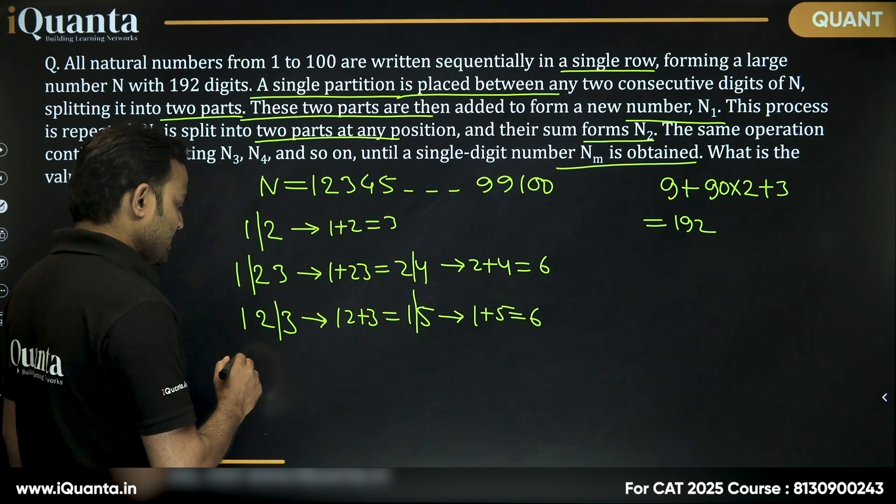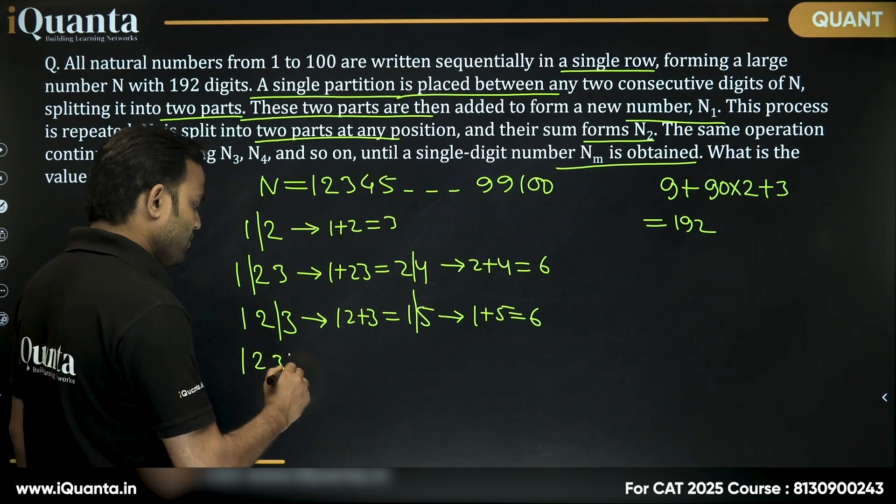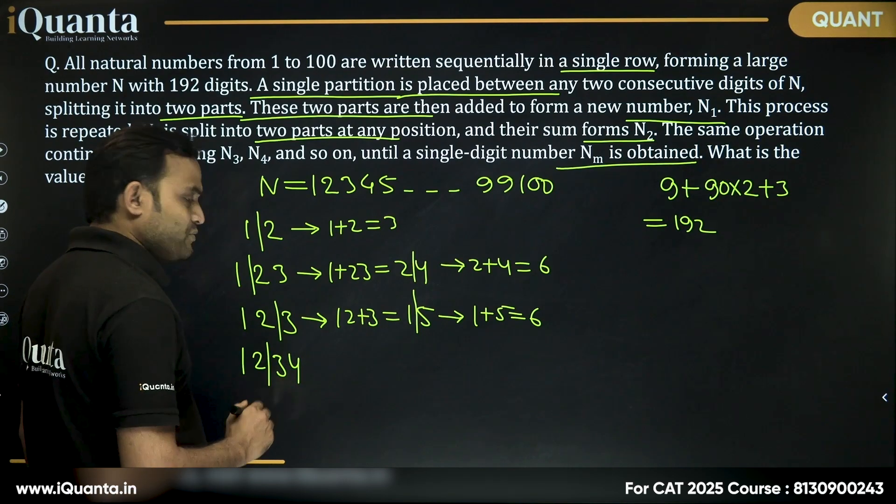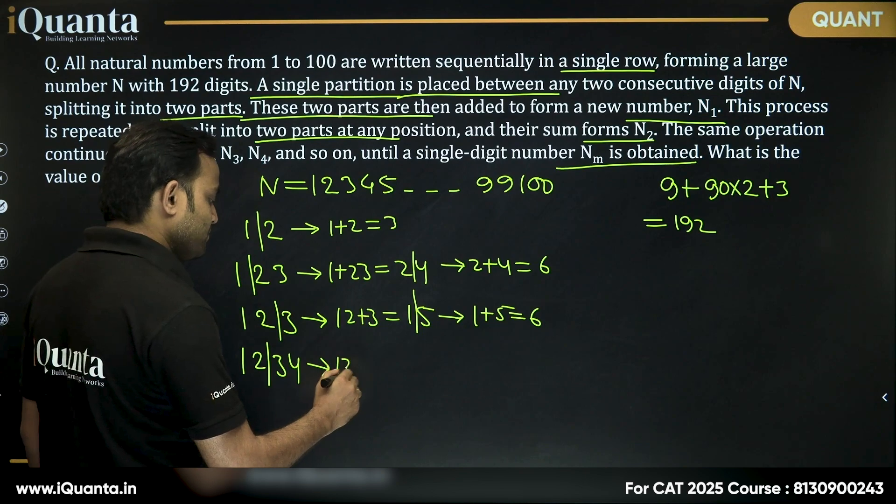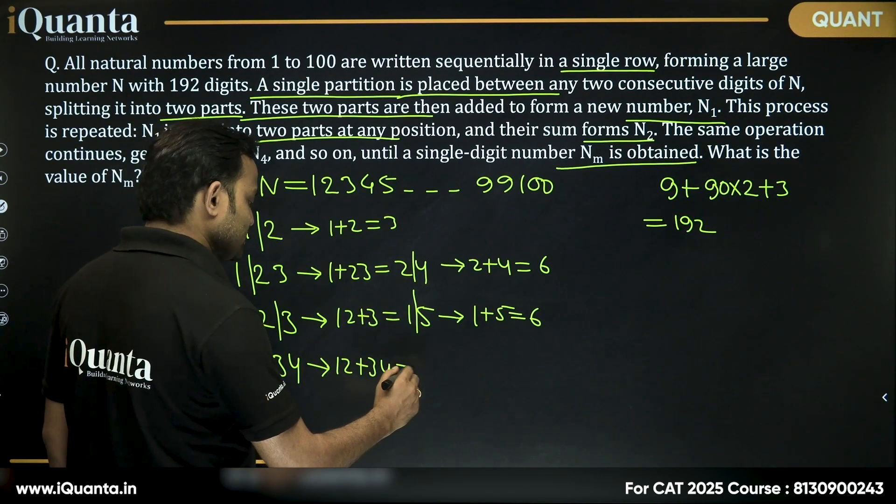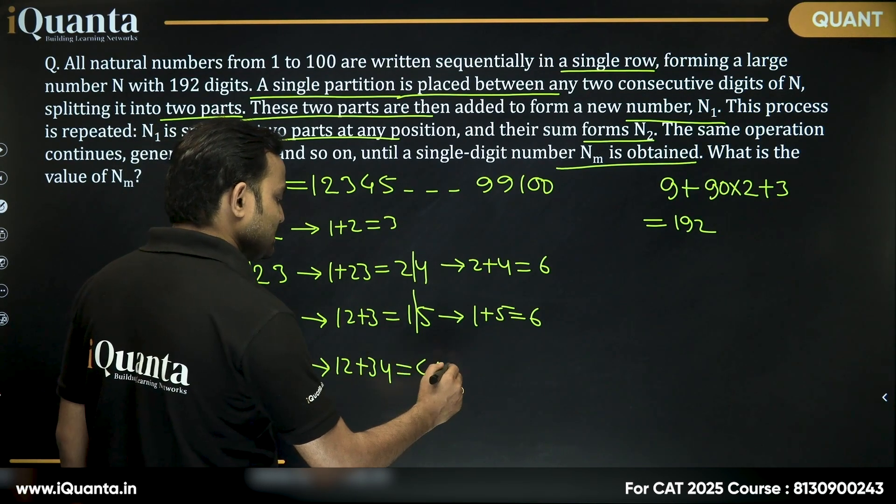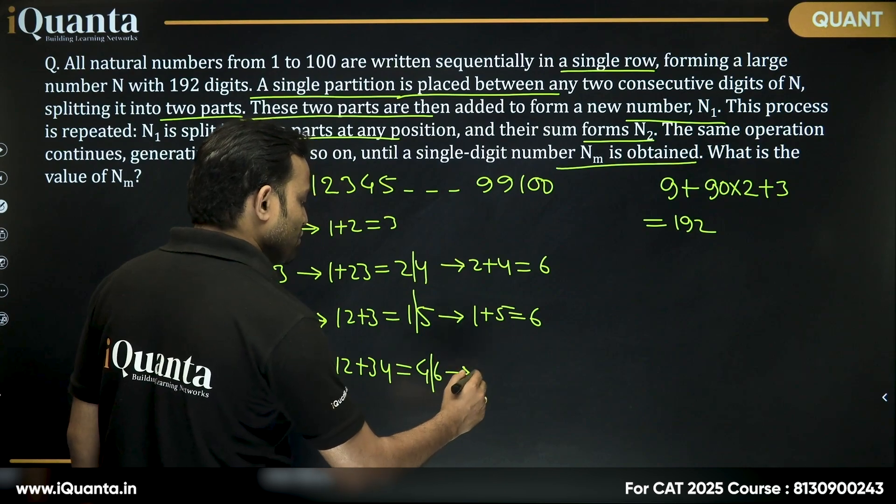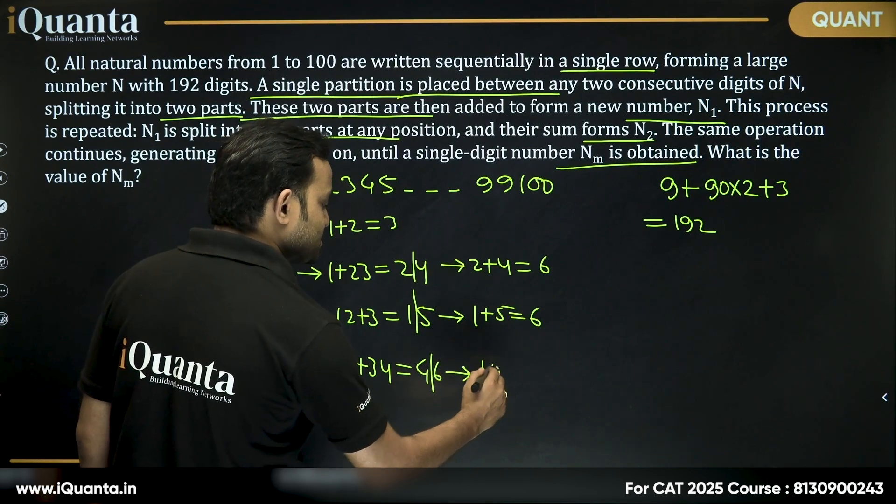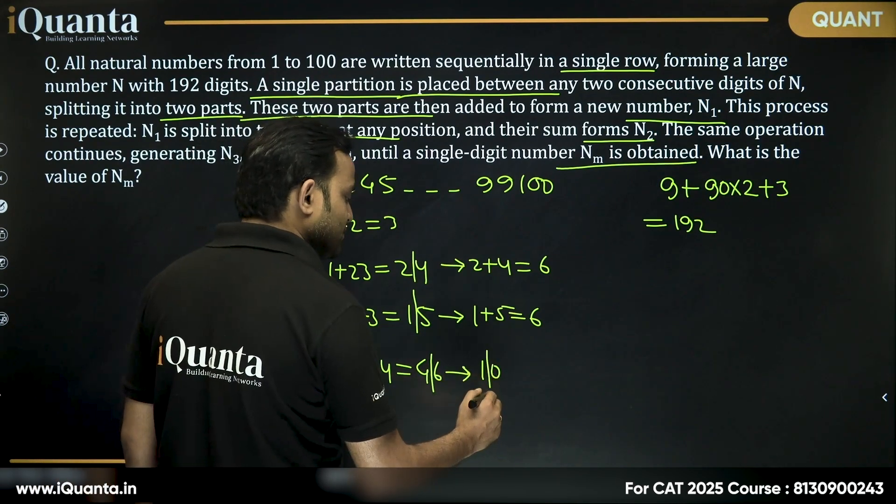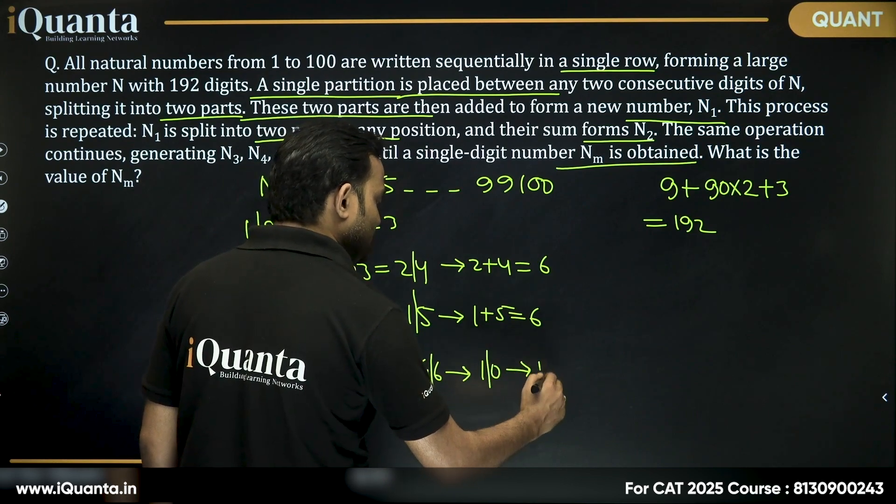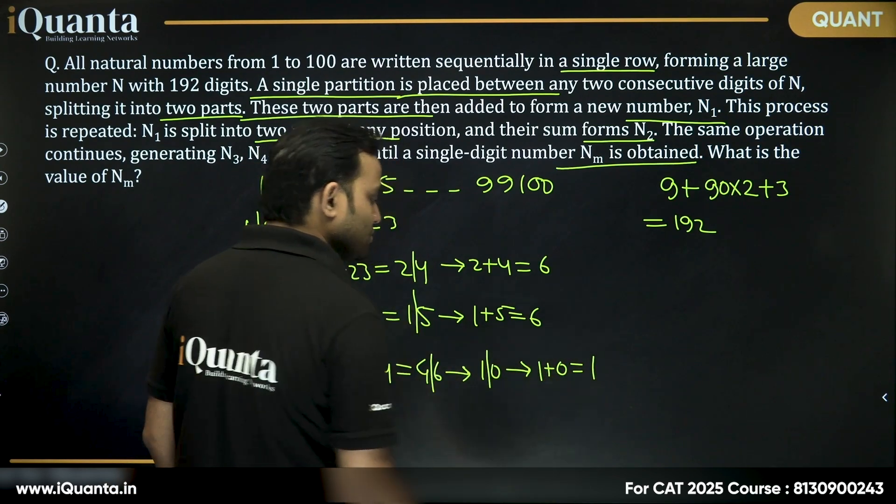Then again, let's take a four digit number 1, 2, 3, 4. If I put a partition between 2 and 3, then 12 plus 34, this is equal to 46. Then if I put a partition between 4 and 6, 4 plus 6 is 10. Then again, put a partition between 1 and 0, we are getting 1 plus 0 is equal to 1.